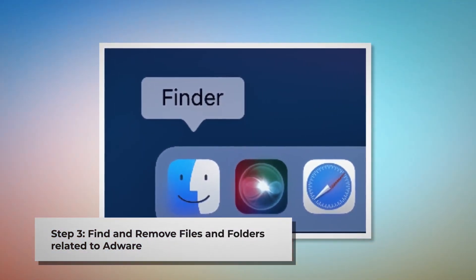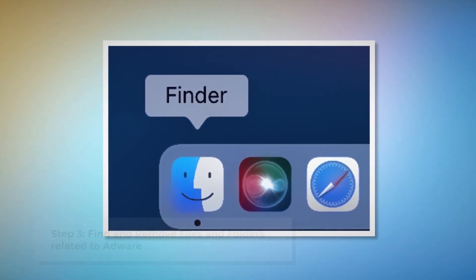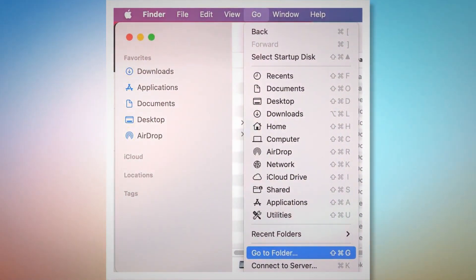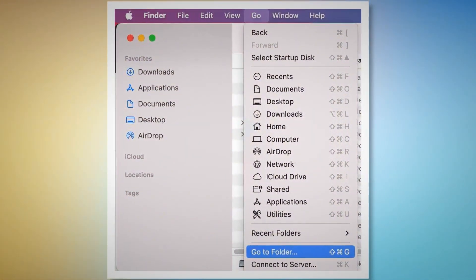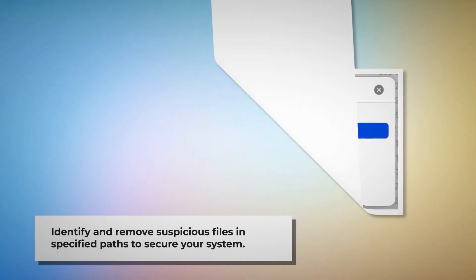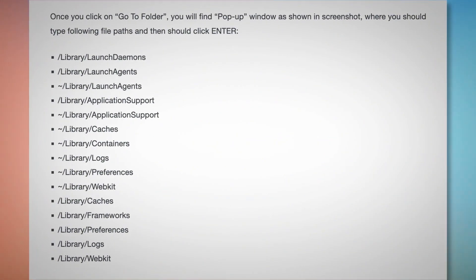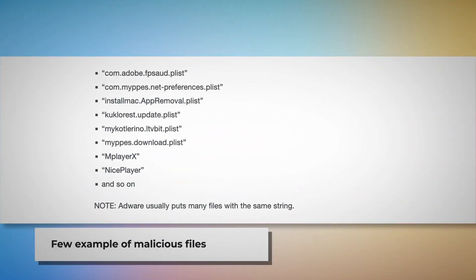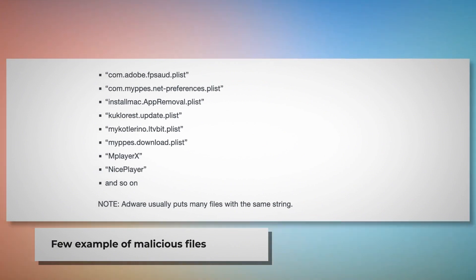Step 3: Find and remove files and folders related to adware. Make sure you are in the Finder folder. Click on Go at the top menu bar and then Go to Folder from the drop-down menu, as shown in the screenshot. A pop-up window will appear where you should type file paths such as Library/LaunchDaemons, Library/LaunchAgents, Library/Application Support, and so on. Look for suspicious or malicious files and move them to Trash. Some examples of such malicious files are shown in the screenshots. Note: adware usually puts many files with the same string.